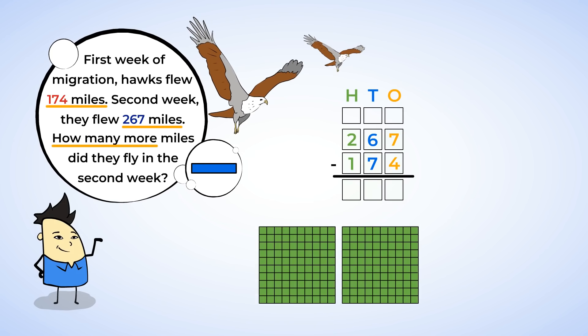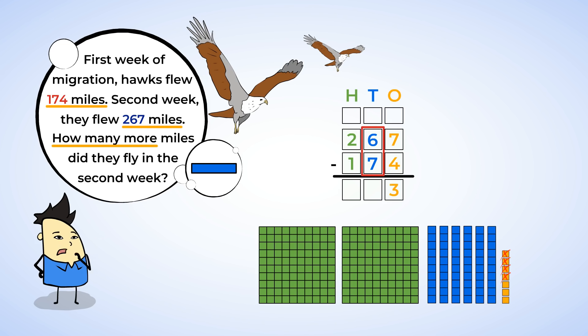Alright, here are 200 plates, 6 ten sticks, and 7 unit cubes to represent 267. As always, start by subtracting the ones. 7 minus 4 is 3. Next, subtract the tens. 6 minus 7 is… wait a minute! There aren't enough tens to subtract 7, so we need to regroup. Just like when there weren't enough ones.